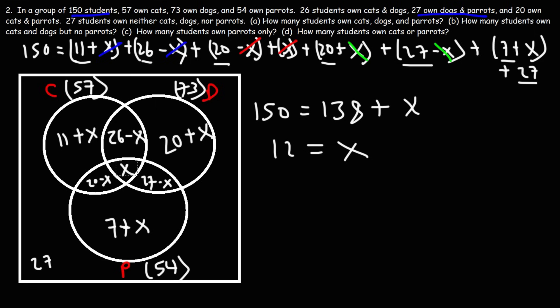Now we replace X with 12 throughout the diagram. Dogs only: 20 + 12 = 32. Cats and dogs but not parrots: 26 − 12 = 14. Cats only: 11 + 12 = 23. Cats and parrots but not dogs: 20 − 12 = 8. Dogs and parrots but not cats: 27 − 12 = 15. Parrots only: 7 + 12 = 19.